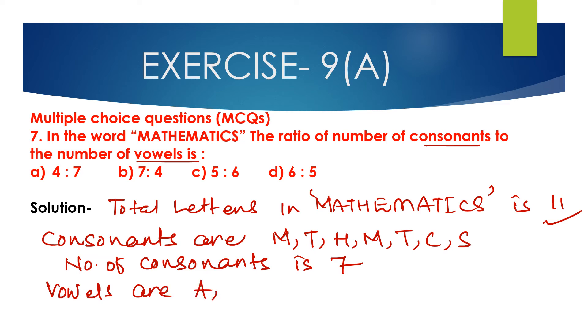Now vowels are A, E, A, I. So vowels are - number of vowels is 1, 2, 3, 4. Number of consonants is 7 and number of vowels is 4.